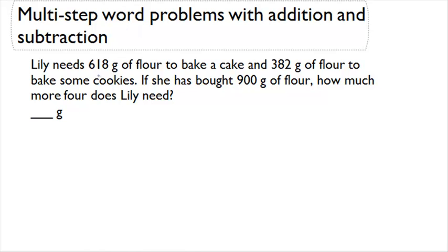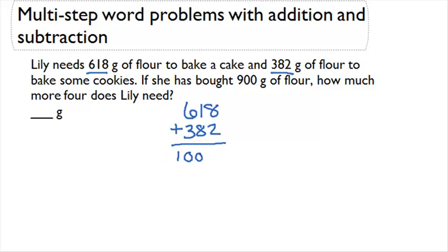So here we want to know the total amount that she needs, which is 618 plus 382. So let's start by adding those. 618 plus 382 gives us a total of 1000 grams of flour that Lily's going to need to do all this baking.